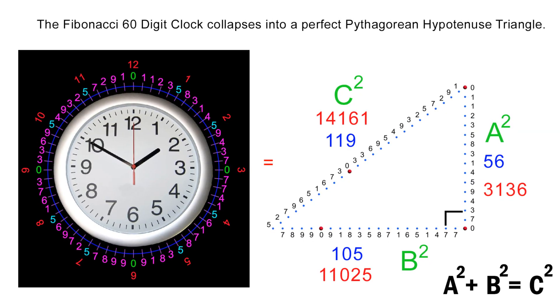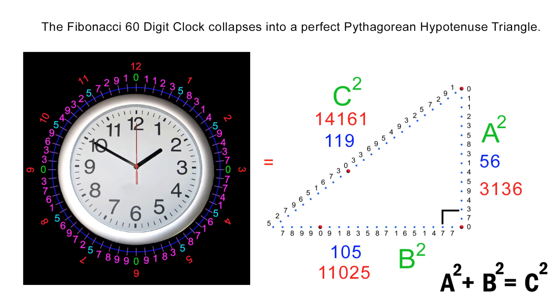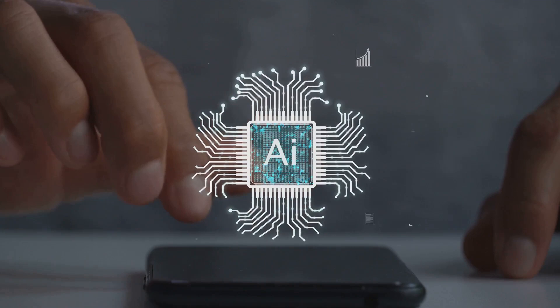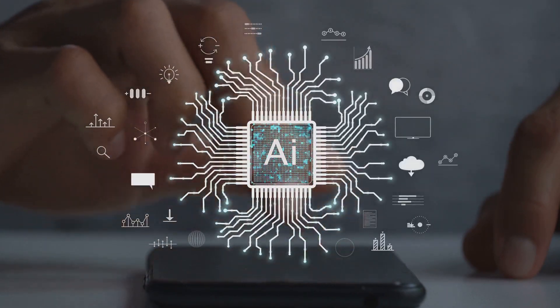Once I got to the part where the Fibonacci 60-digit clock collapses into a perfect 90-degree hypotenuse triangle, it was totally in awe of my discovery and my unconventional way of thinking outside the box. Bear in mind that this is an entity that has heard every scientific theory there is.